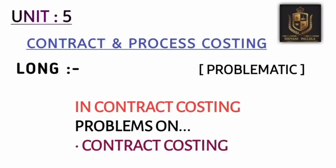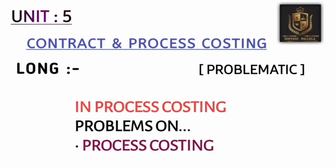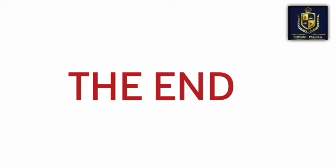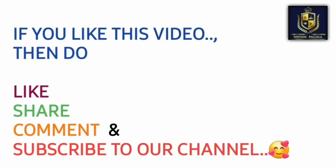For unit five, you can skip contract costing and go for process costing, as process costing problems are very easy. Explanation videos will be uploaded for process costing. The 12-mark compulsory question will be on process costing. For short answers, topics like abnormal gain and notional profit in process costing are important. If you are perfect with the problematic, you can easily convert your understanding into theory answers.